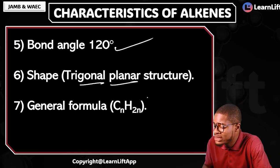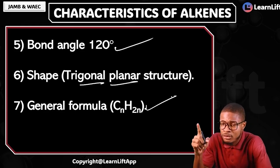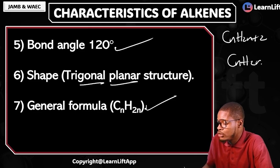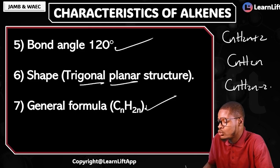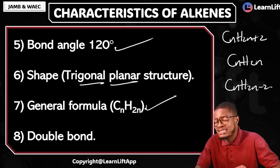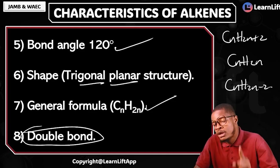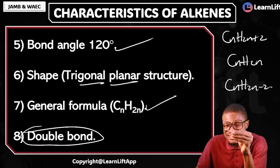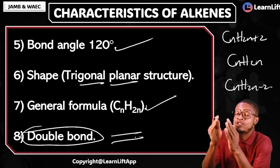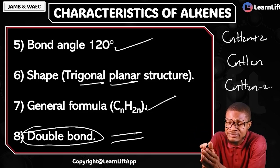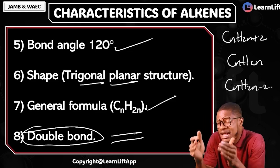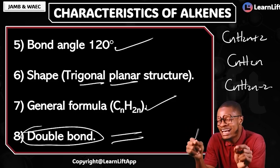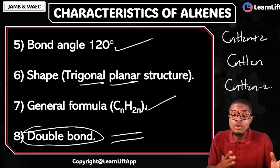Number seven: their general formula is CₙH₂ₙ. For alkanes with single bonds it is CₙH₂ₙ₊₂; for double bonds it is CₙH₂ₙ; for triple bonds it is CₙH₂ₙ₋₂. Number eight: don't forget that they have a double bond. What's the functional group for alkenes? Alkenes have a functional group — it is that double bond. That double bond is what determines their reactivity. That double bond determines their chemical properties. Chemical properties are determined by the functional group. The functional group can be defined as an atom, group of atoms, an ion, a radical, a molecule, or a bond that differentiates the members of a particular homologous series from all others.